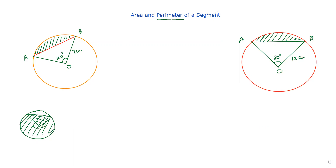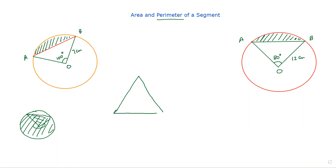Now, this perimeter of a segment is really a challenging and complicated kind of concept. Before I take you to the perimeter of a segment, I would like you to be able to recall the properties of an isosceles triangle. Guess why am I asking you to recall the properties of an isosceles triangle?